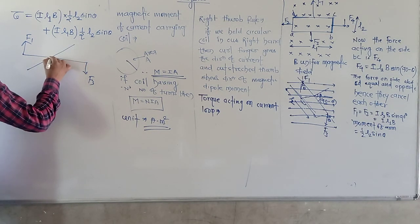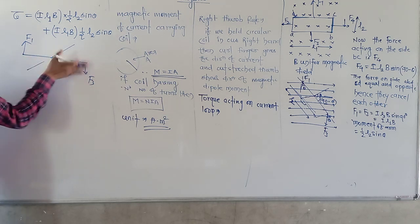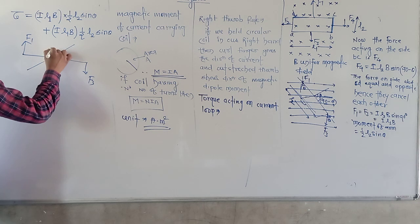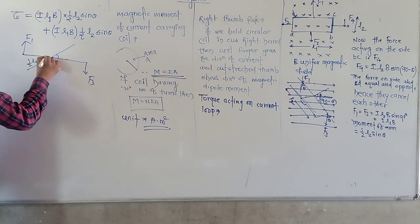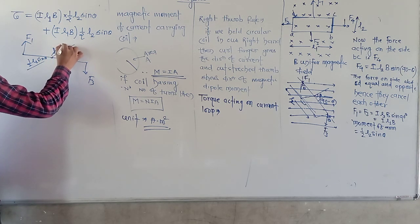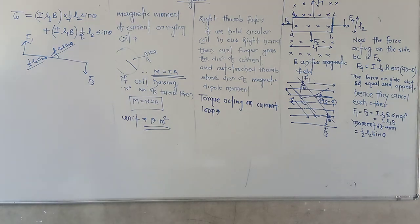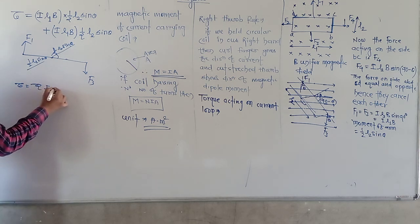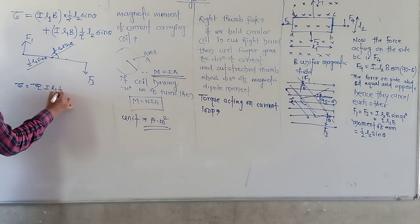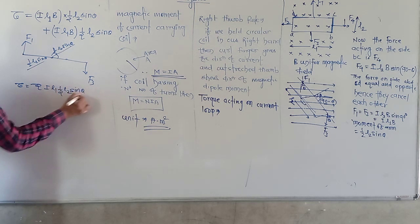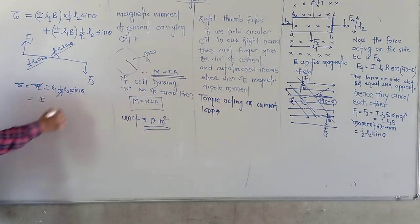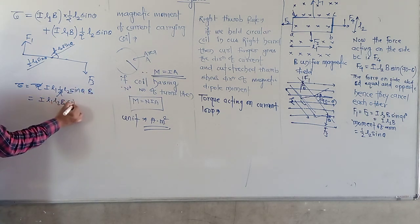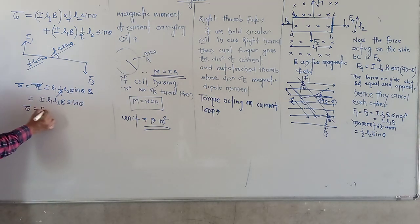The moment arm shifts by angle θ, so each half side is one-half L2 sin θ. Therefore, our total torque is 2 × IL1B × one-half L2 sin θ. The factor of 2 cancels, leaving τ equal to IL1L2B sin θ, which is τ equal to IAB sin θ.